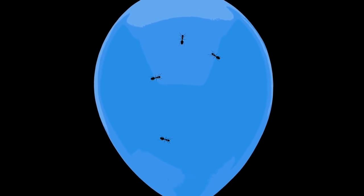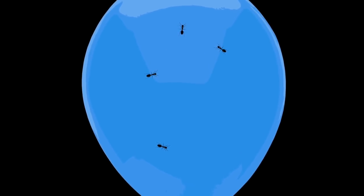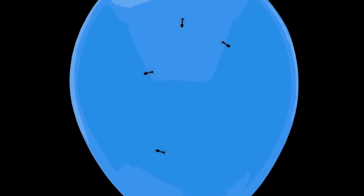Think of the surface of a balloon as it's being blown up. If there are ants on the surface, they will all move away from each other, even though none of them is actually at the center. The surface of the balloon doesn't have a center. And like the rubber of the balloon, throughout the universe, space itself is expanding.